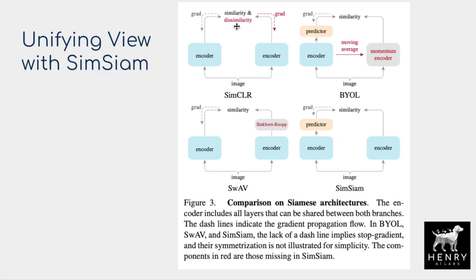SimCLR maximizes dissimilarity in addition to similarity, and gradients flow back through both the x1 and x2 encoders, also encoding a large negative batch. Bootstrap Your Own Latent adds a moving average momentum encoder — so the target network is a lagging update, not exactly the same weights as the online network. The SWAV clustering algorithm uses the Sinkhorn-Knopp method to organize negative encodings, with a structure of clustering and predicting cluster assignments in an online way — avoiding an intermediate update-then-cluster loop, adding additional algorithmic complexity.